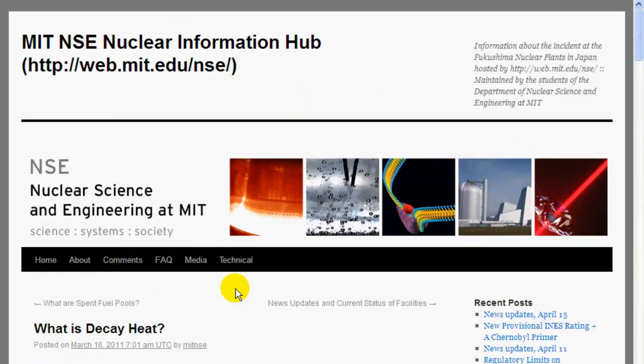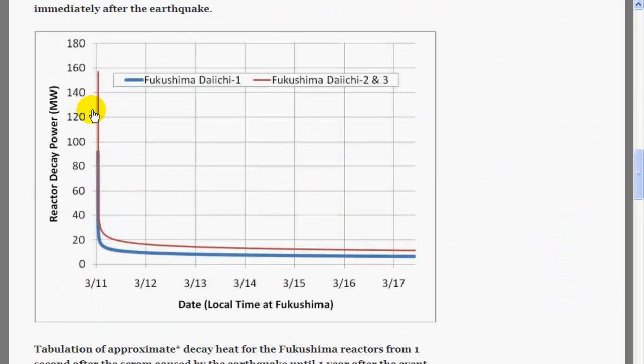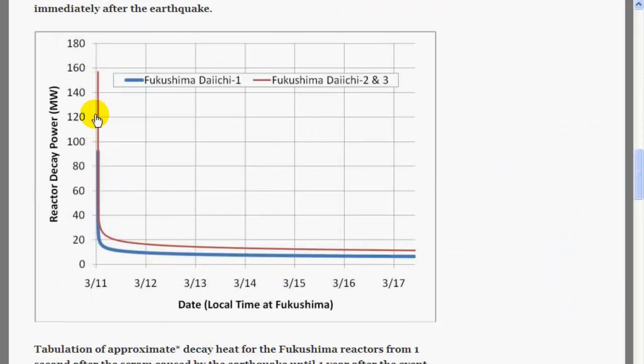This webpage is from MIT Nuclear Information Hub, and they've made a graph here showing how the power of the reactors changes with time. And at the very beginning it had lots of power because they were still turned on.